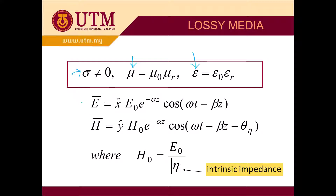This is the general equation of the electric field: E equals E_naught in the x-direction, times exponent negative alpha z, times cosine of (omega t minus beta z). We should note this extra component — exponent negative alpha z — which represents the lossy part, or attenuation.